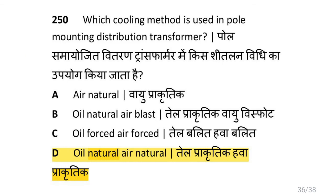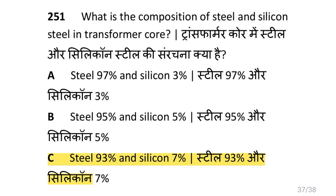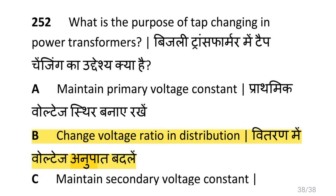Which cooling method is used in a pole-mounted distribution transformer? That is oil natural, air natural. What is the composition of steel and silicon in transformer core? That is steel 93% and silicon 7%. What is the purpose of tap changing in power transformers? That is to change the voltage ratio in distribution.